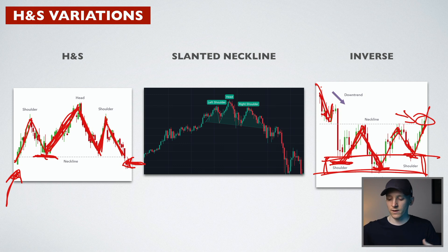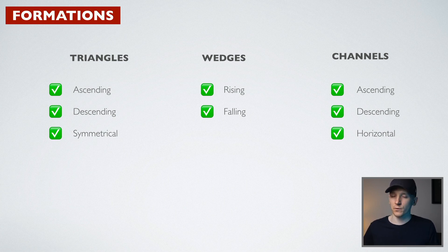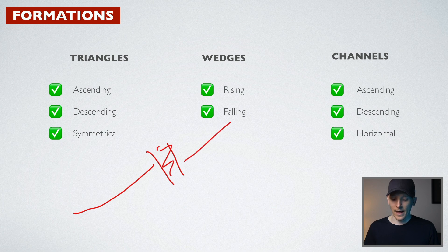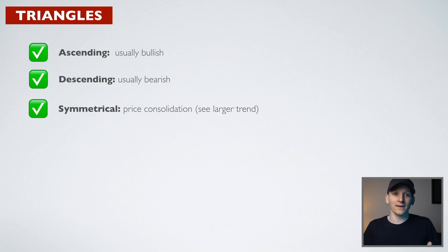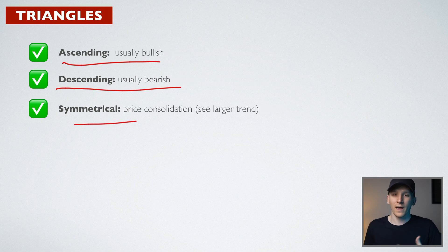Now we look at formations — triangles, wedges, and channels. Triangles come in three types: ascending, descending, and symmetrical. Ascending triangles are usually bullish, so you look for them within uptrends and trade breakouts. Descending triangles are usually bearish — look for them in downtrends as a continuation. Symmetrical triangles don't really tell us much on their own; you look at the wider trend and market to make breakout trades.